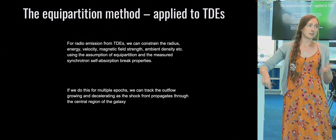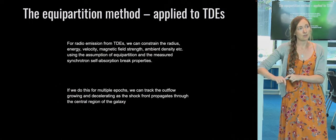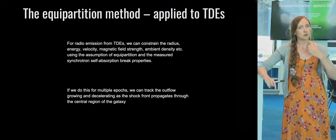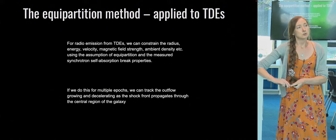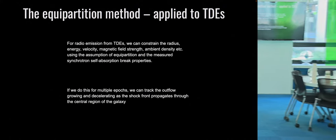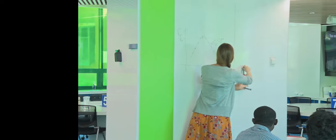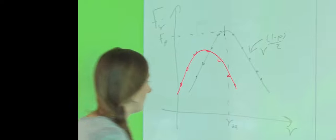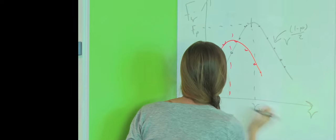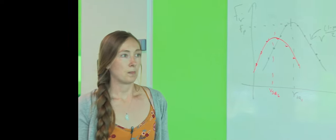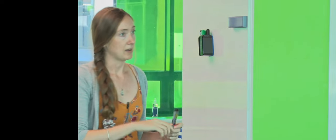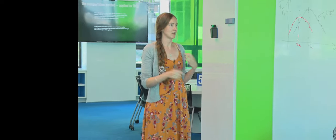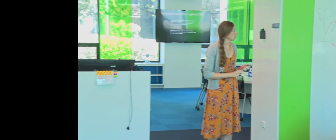Basically, just from observing a synchrotron spectrum we can constrain the radius, energy, velocity, magnetic field strength, and ambient density, using the assumption of equipartition for every TDE — provided that we have detailed radio spectra. If we do this for multiple epochs, watching the spectrum shift from one epoch to another and measuring a different ν_SA each time, we can get a really good constraint on the velocity of the outflow and how that outflow might be decelerating over time.